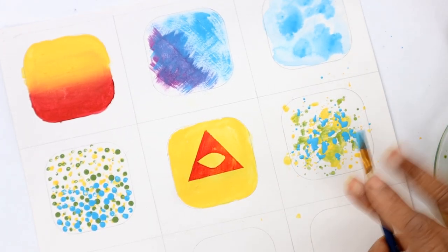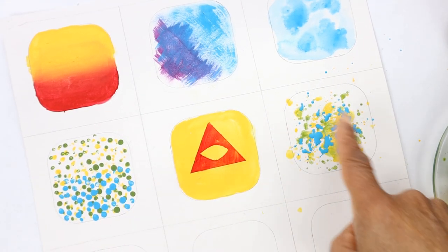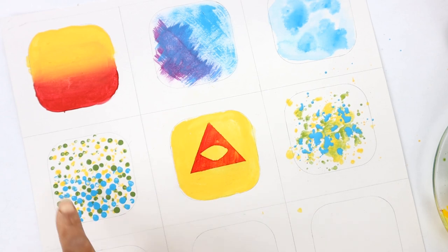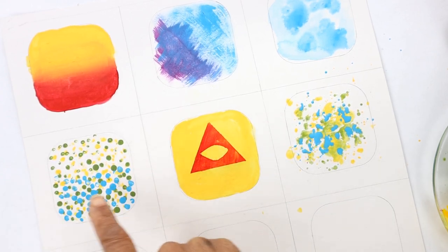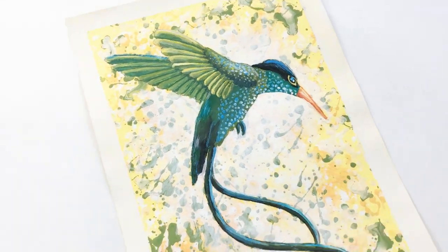When we compare the splats to the pointillism, we can actually see how much more organic the splats are, and the pointillism dots are much more controlled. Pay attention to the edges because the beautiful splashes often end up in the middle.